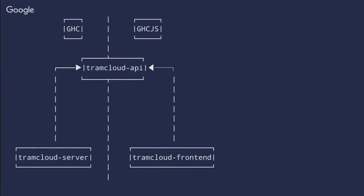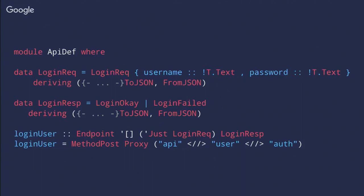Here's an example from our tram cloud application. We have three packages: the tram-cloud-server package implementing all the business logic, a tram-cloud-api package describing what our API looks like in Haskell types and Spock routes, and the frontend code which is compiled by GHCJS to run in the browser.